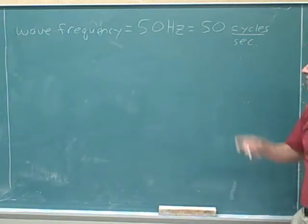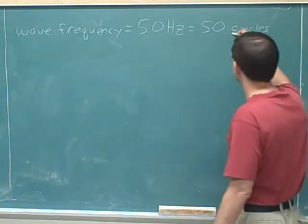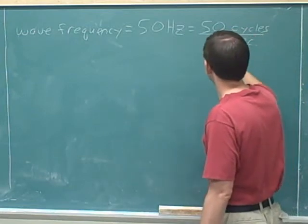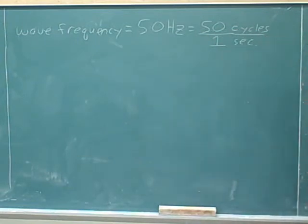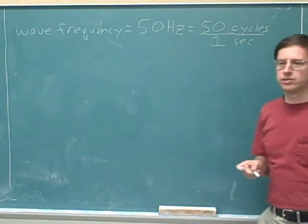So now let's try to interpret what this is telling us about this wave. Well, it means that in one second, the wave goes through 50 cycles.